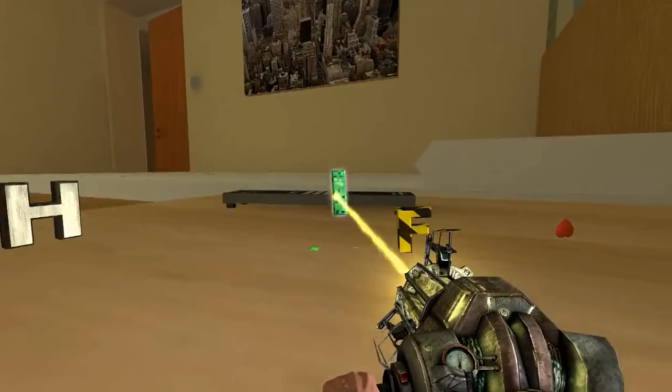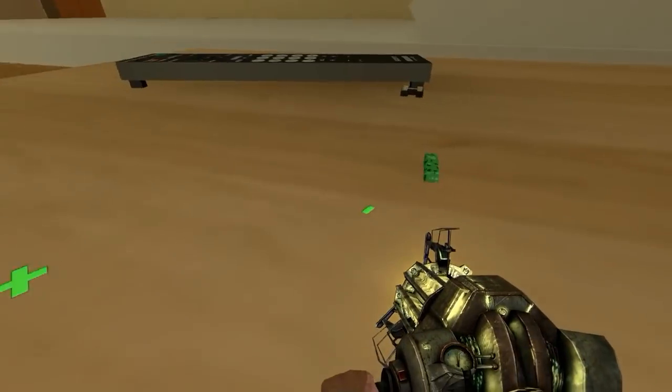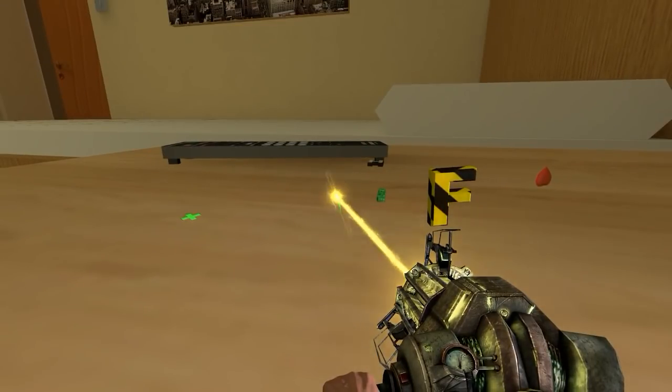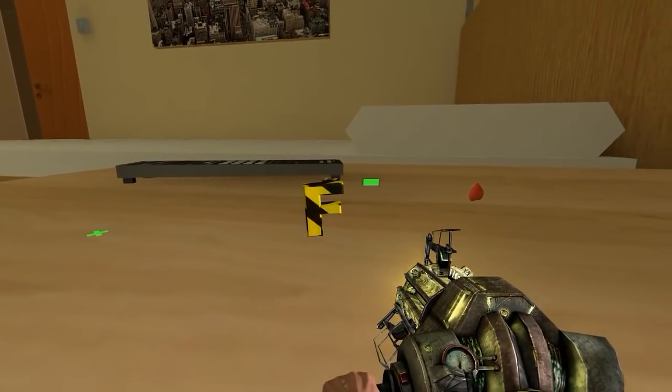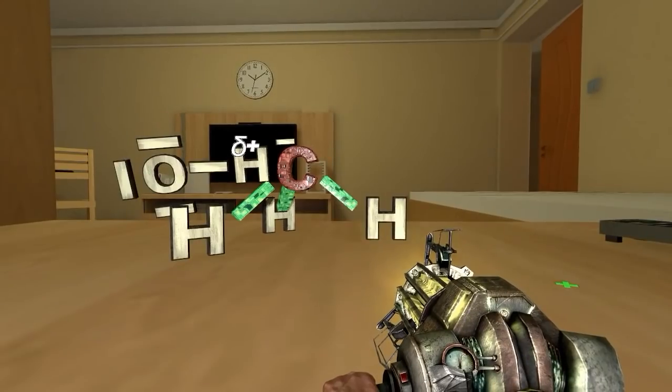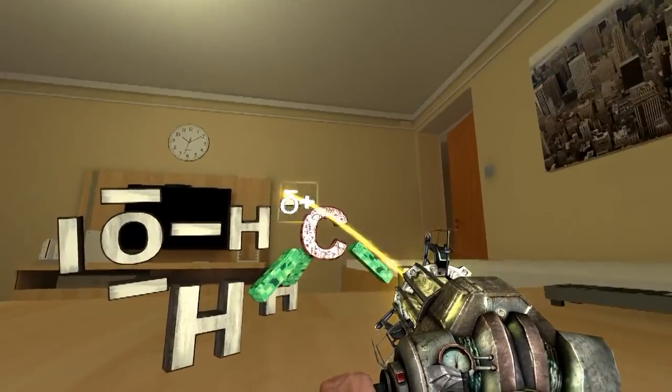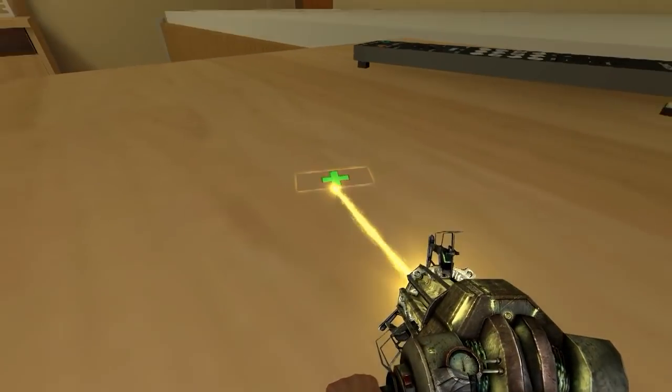So the fluorine takes that pair of electrons in the bond with it, making the fluoride ion as one of the products, leaving behind a positive methyl.